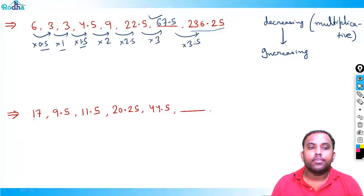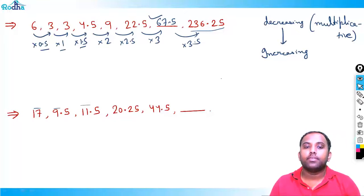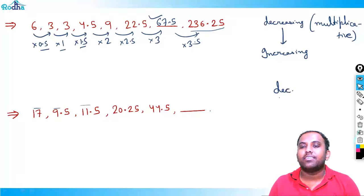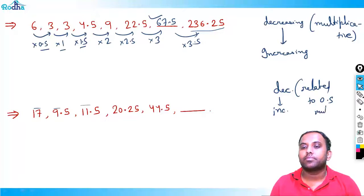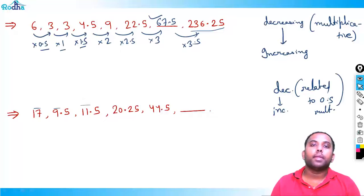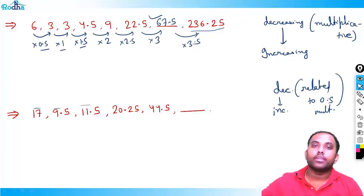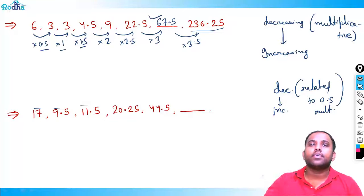Next series: 17, 19, 9.5, 11.5, 20.25. Again something is multiplying — the series decreases then increases, related to ×0.5 multiplication. Pattern: each term is (previous term × multiplier) + added constant. 17×0.5+1=9.5, 9.5×1+2=11.5, 11.5×1.5+3=17.25+3=20.25. Multipliers: 0.5, 1, 1.5, 2, 2.5; added constants: +1, +2, +3, +4, +5.